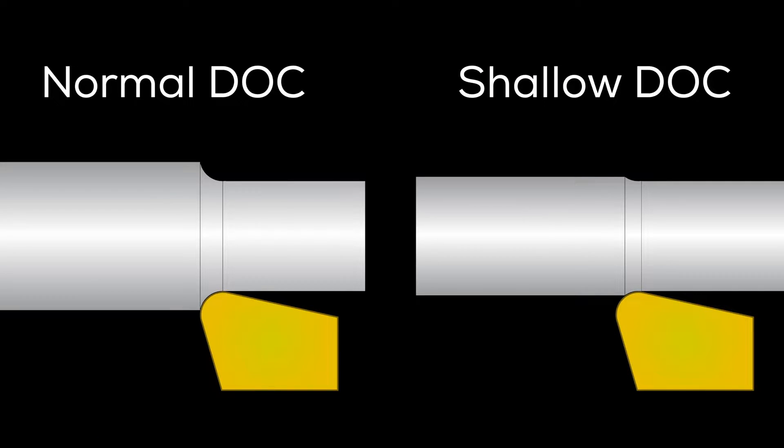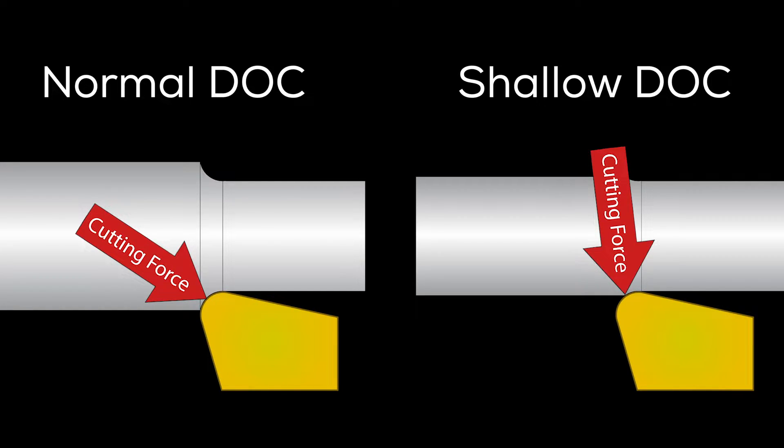Now in this illustration, let's compare what the cutting forces look like between a normal depth of cut, which is about equal to the nose radius, and a very shallow depth of cut, like what we did in our experiment. With a normal, proper depth of cut, the cutting forces are distributed with an axial component and a radial component, but if you take a very shallow depth of cut, the cutting forces are almost exclusively in the radial direction.